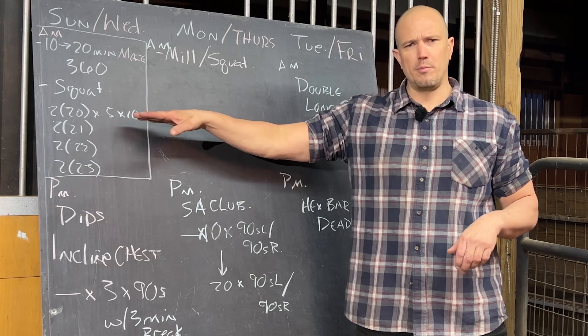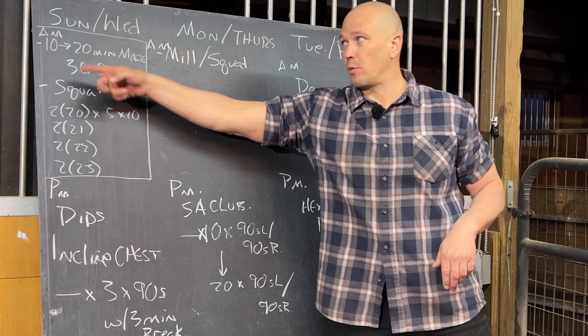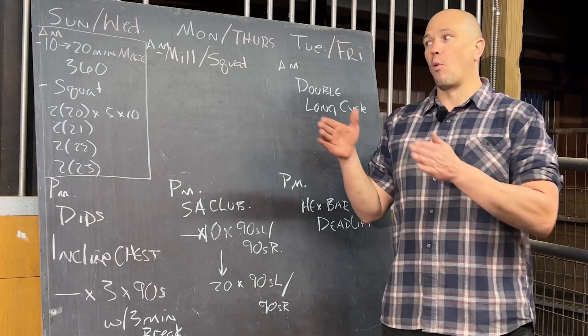And then the next time on Wednesday, we will go to double 21s, Sunday 22s, Wednesday 23s, etc. And we will walk our way back up.